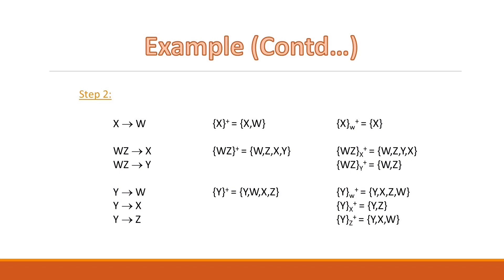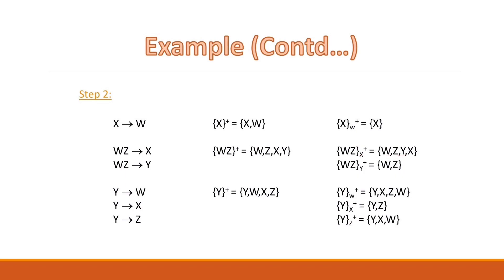The third functional dependency is WZ to Y. If we remove this functional dependency, the closure of WZ contains only W and Z. Since the closure is changing, we cannot remove this FD. WZ to Y is an essential one.